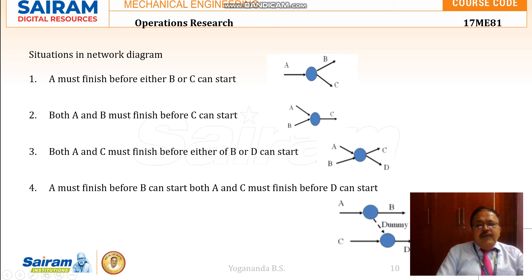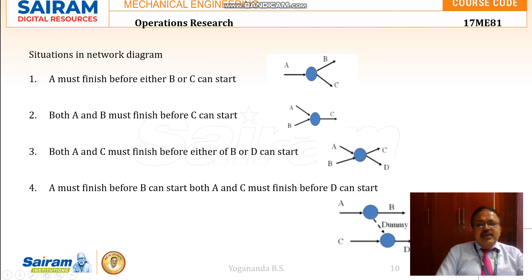If you want to start activity D, A must be over. To start activity C, both A and B must be over. A must finish before B, meaning before starting B, A should be completed. And C must be finished before D can start. Here, we use a dummy activity to make sure that D can be started only when both A and C are finished.